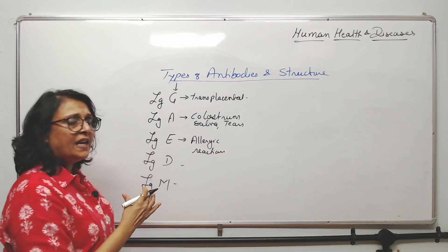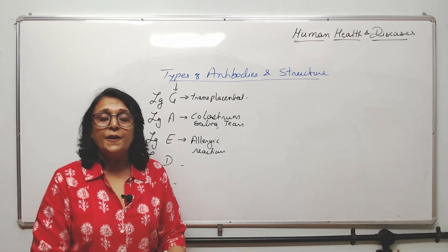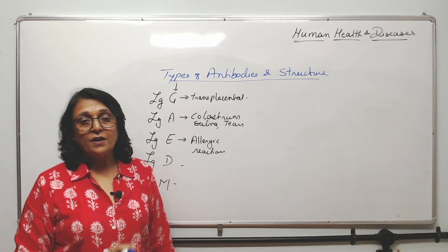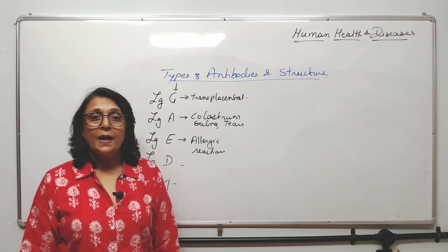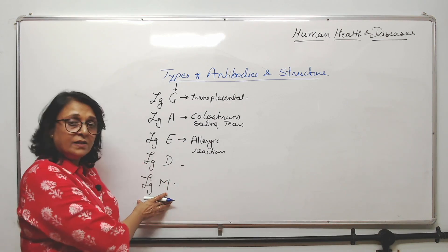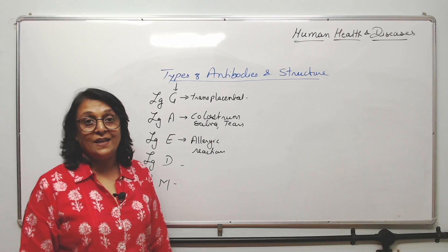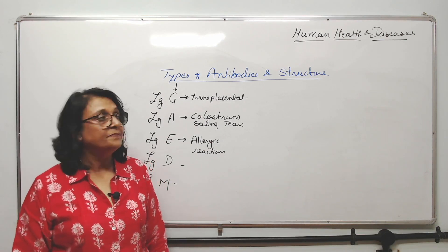IgD and IgM we normally don't discuss in detail as they are not in our syllabus. But these are the biggest ones in size and they have delta chains — that is why the name D.